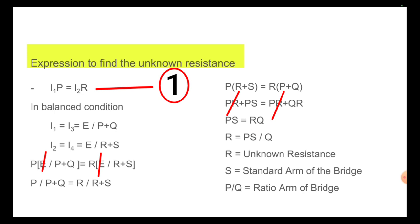Then by rearrangement, R is equal to PS by Q. R is the unknown resistance value. S is equal to standard arm of the bridge and P by Q is equal to ratio arm of the bridge.